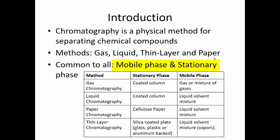What's common to all chromatography processes is that you have a mobile phase and a stationary phase. For gas chromatography, the stationary phase is a coated column, and the mobile phase is a gas or mixture of gases. For liquid chromatography, it's also a coated column connected to the instrument, and the mobile phase is a liquid solvent or mixture of solvents.